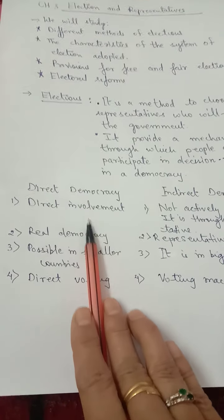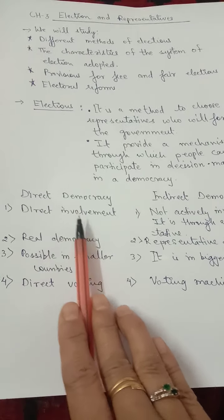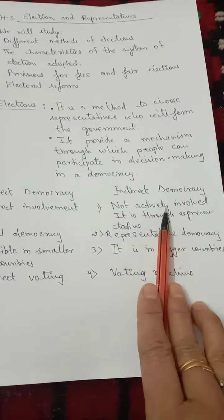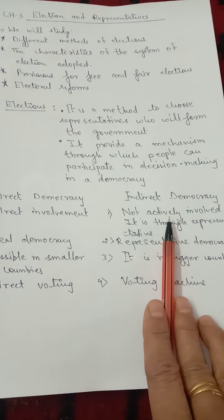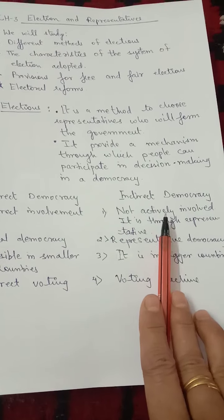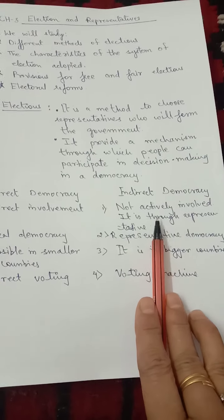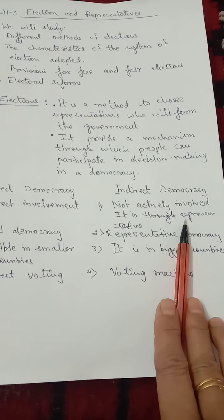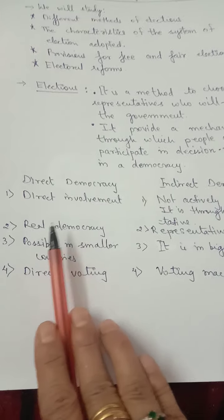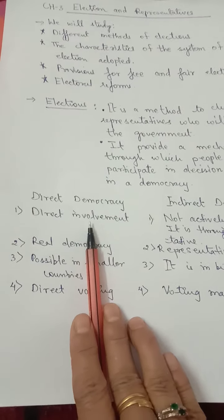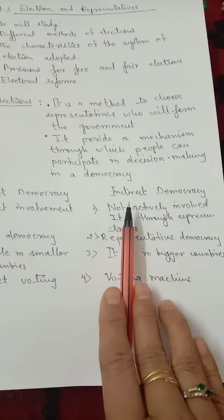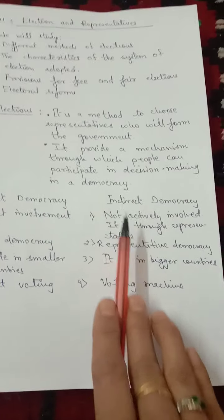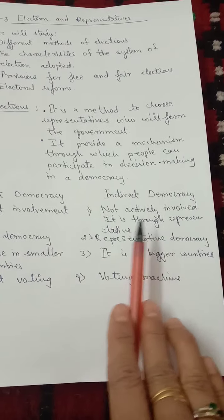In direct democracy, people have the main role — they are directly involved in taking decisions. In indirect democracy, people are not actively involved in making policies; citizens are involved only indirectly through their elected representatives. That is why direct democracy is called real democracy, because people are directly involved in decision-making. And indirect democracy is called representative democracy, because we elect representatives who take decisions on our behalf.